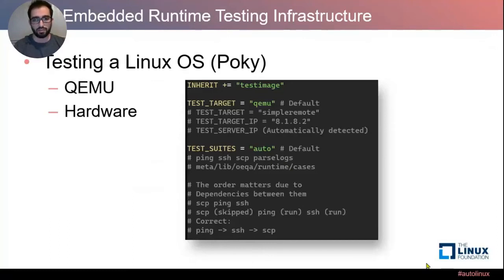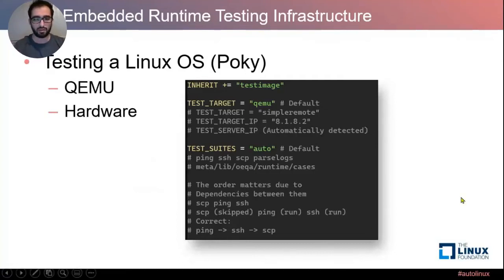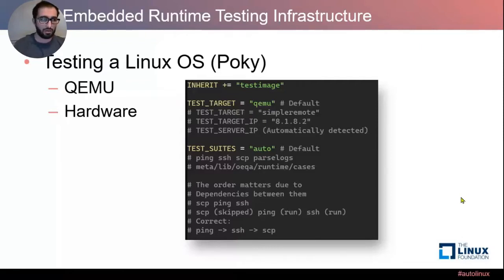If you wanted to test a Linux OS, the way it works is that you can either use QEMU or real hardware. In this example on my local.conf, I'm inheriting the test image class, setting the target as QEMU, and setting the test suites as auto — which gives you a good number of tests. You can also specify a simple remote target with an IP address, where the test will be done through SSH. For test suites, you can specify on a per-case basis — for example: ping, SSH, SCP, or parse logs — which are located in the meta/lib/oeqa/runtime/cases directory.